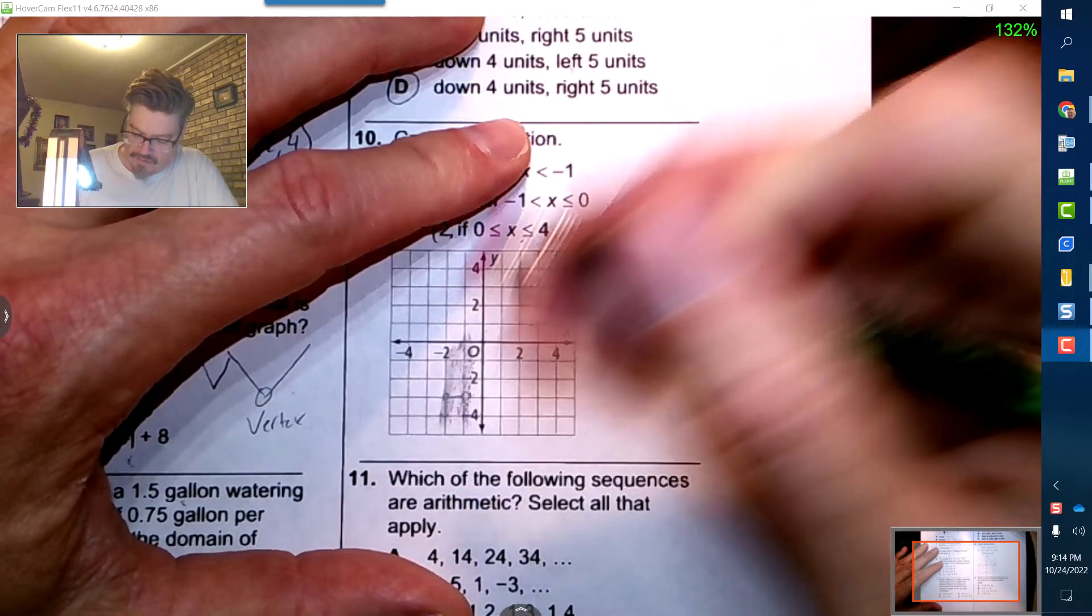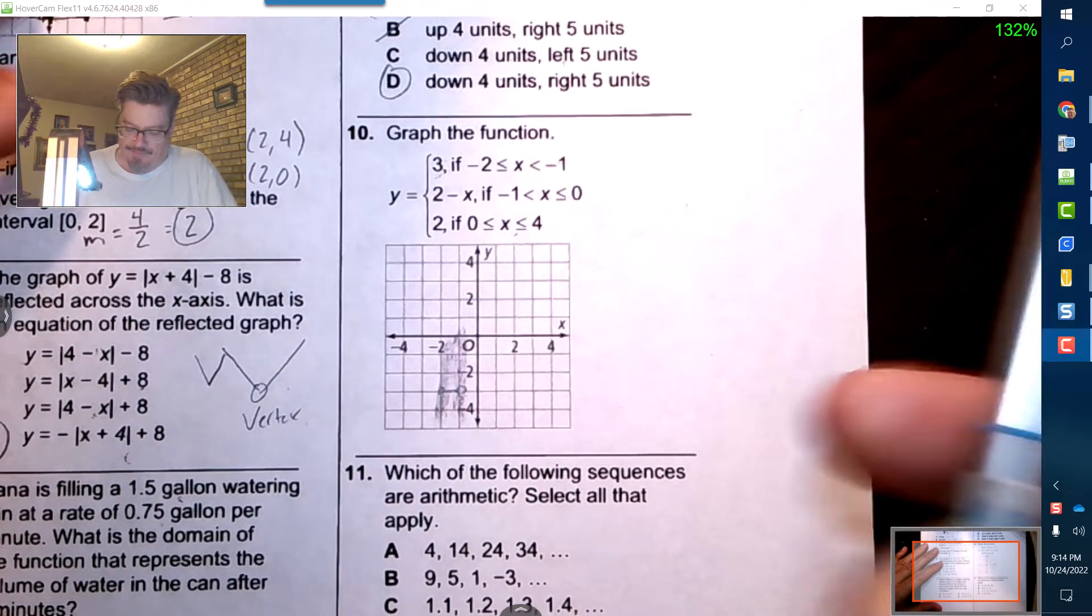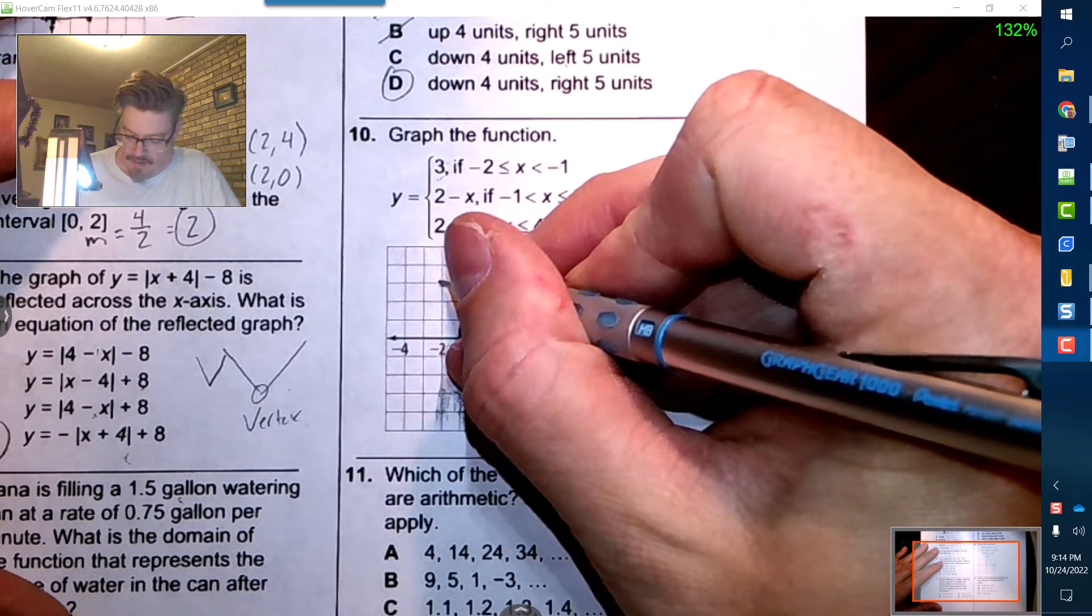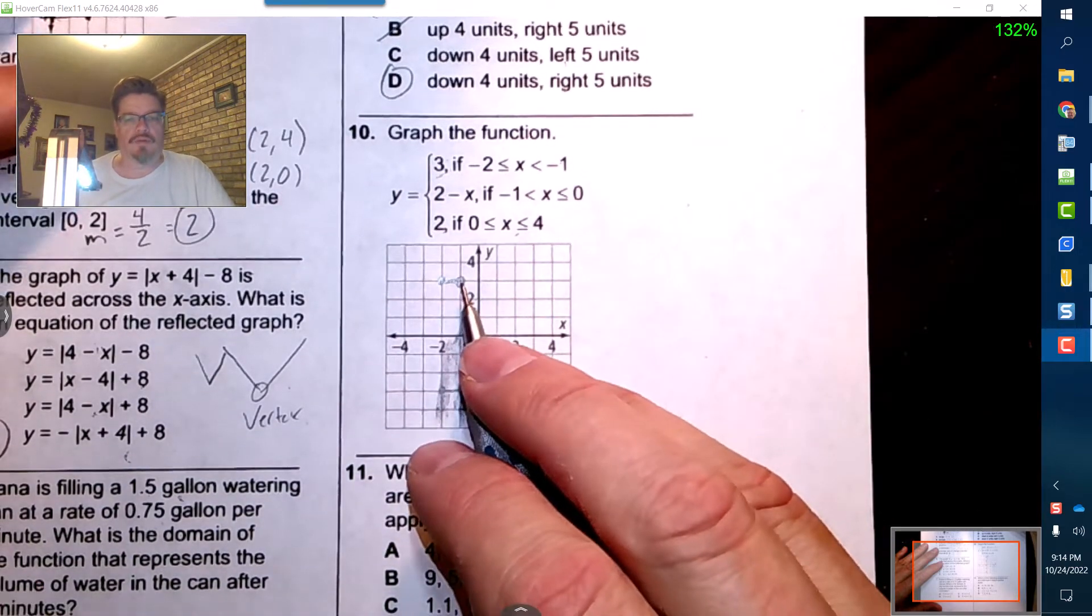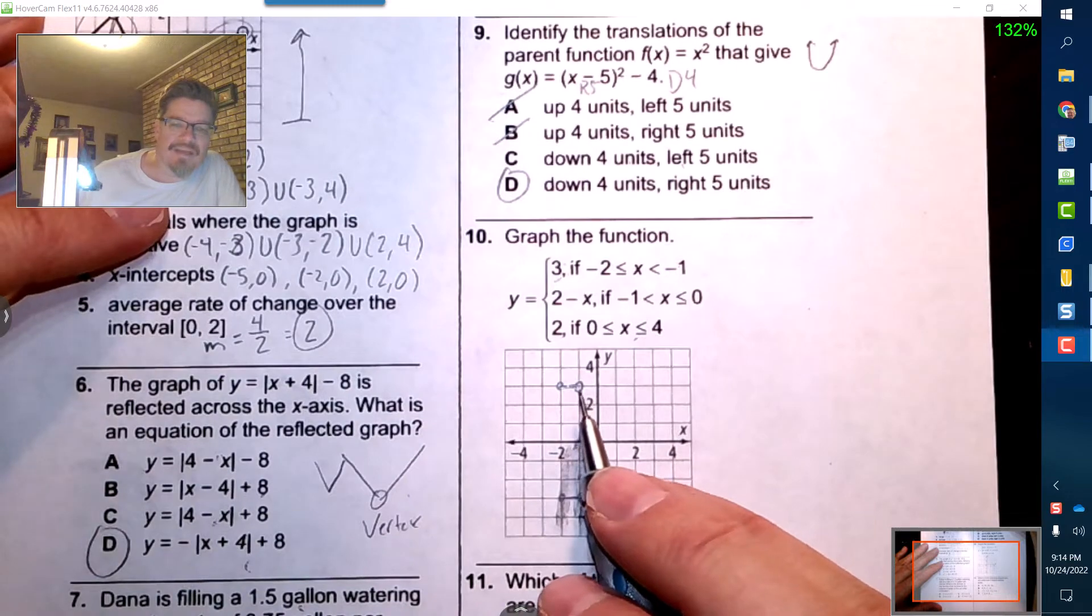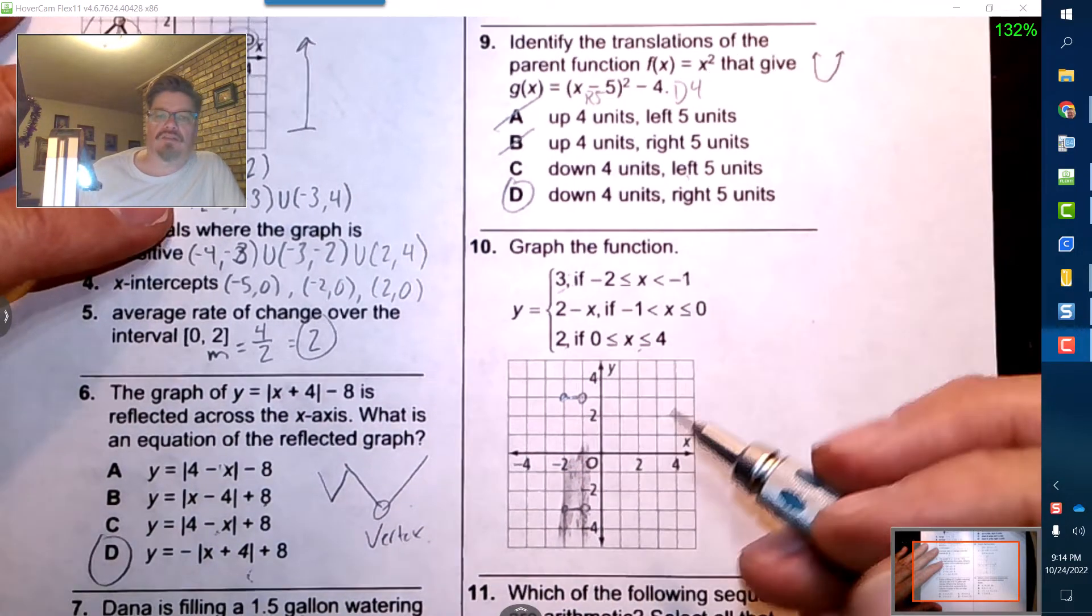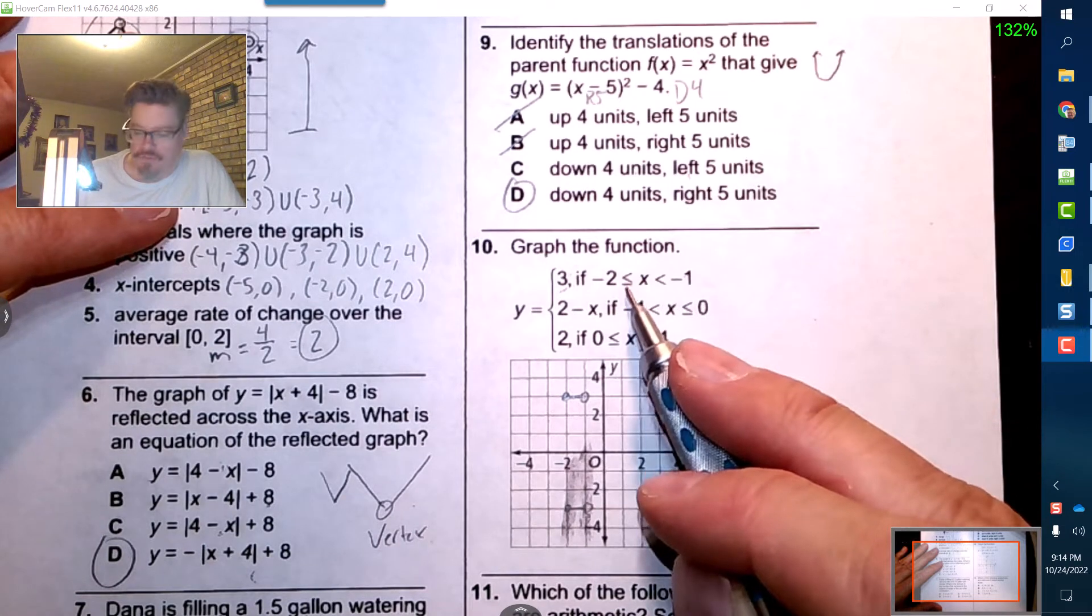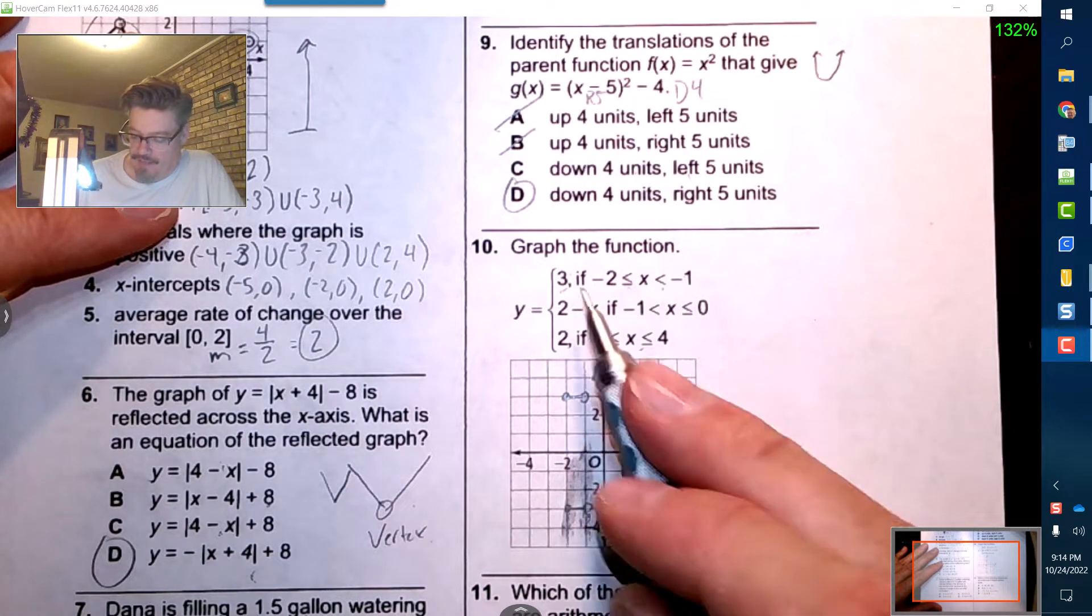Okay, 3 here. I notice that that is open and I know the lighting doesn't look like it but that is open, that is closed. So closed open. So from negative 2 to negative 1 it's positive 3.